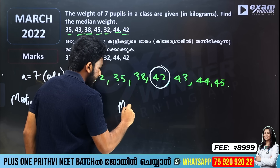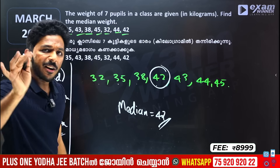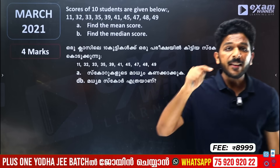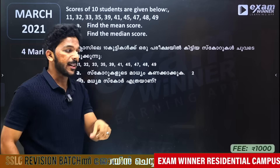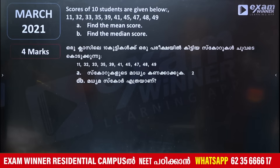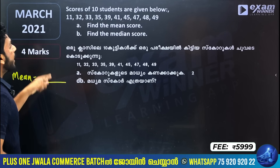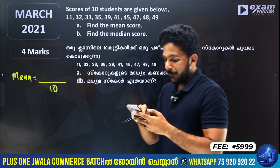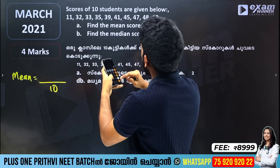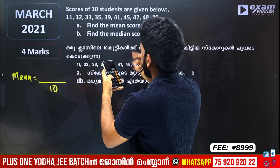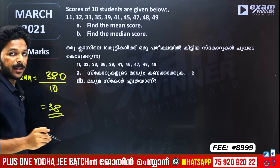Because n is odd, we just pick that 4th term — the median is at that single point. I showed you 4 marks for this. Now if you have 10 students, find the mean score. You add all the scores: 11 + 32 + 33 + 35 + 39 + 41 + 45 + 47 + 48 + 49, then divide by 10. The mean is 38.